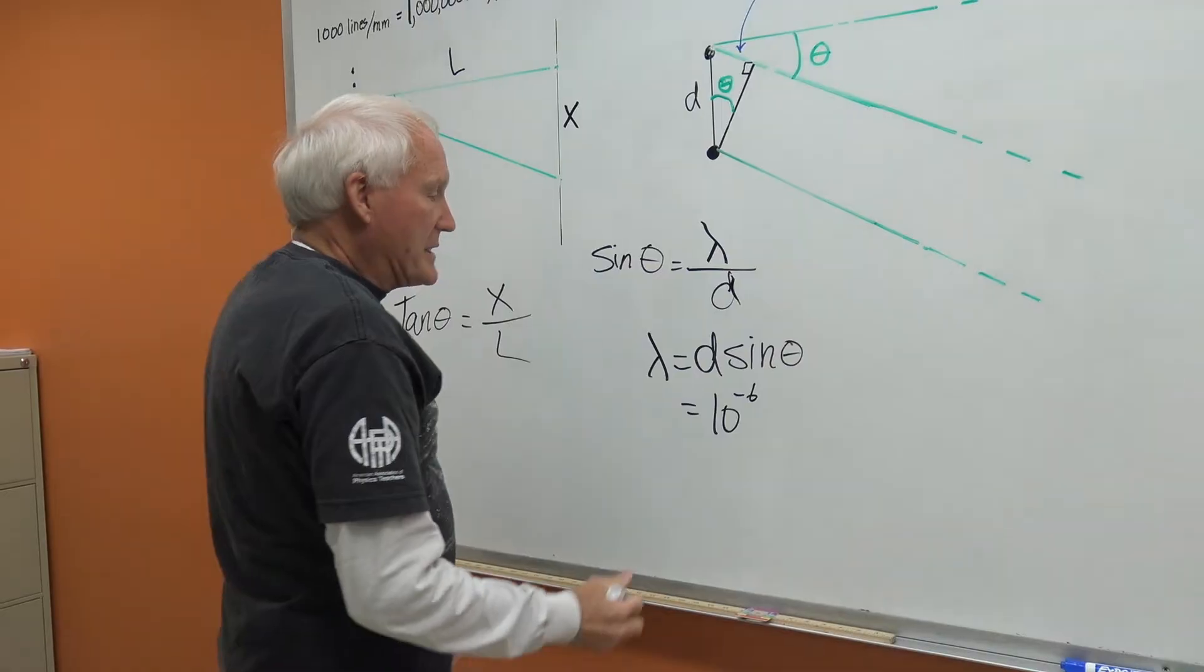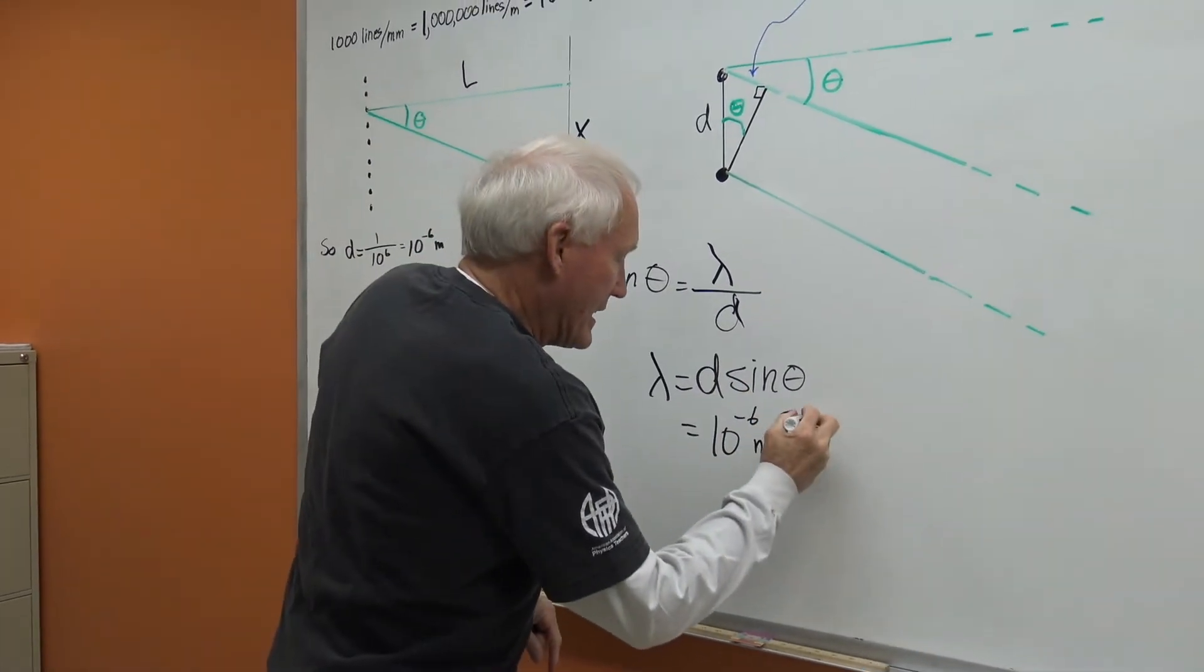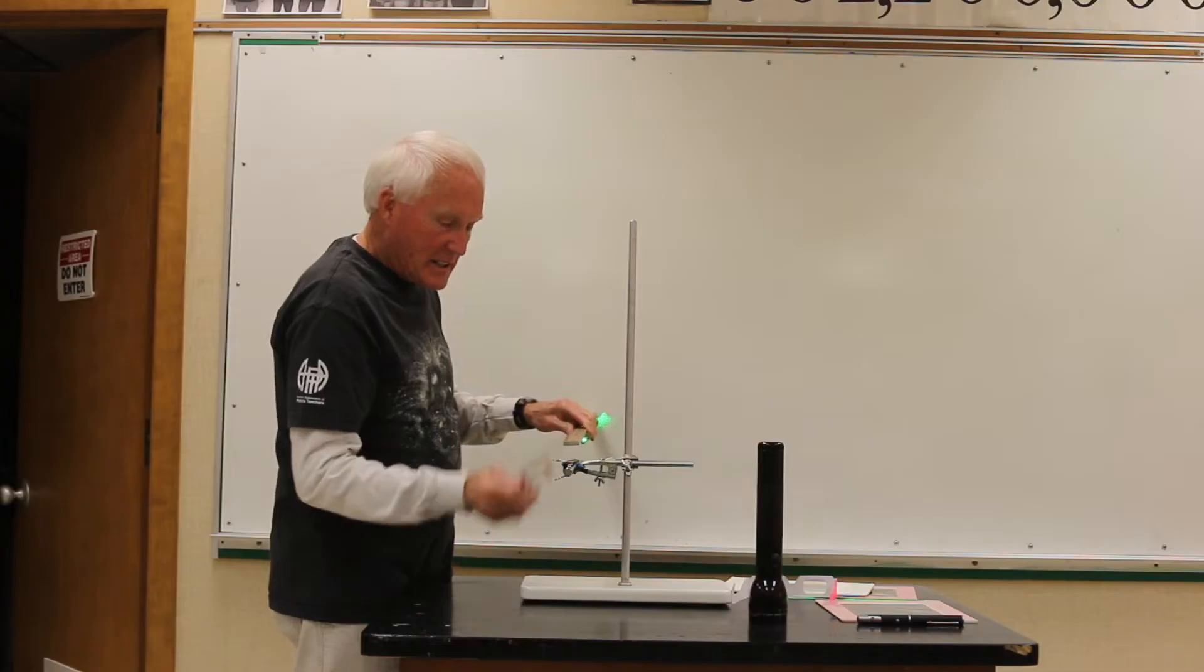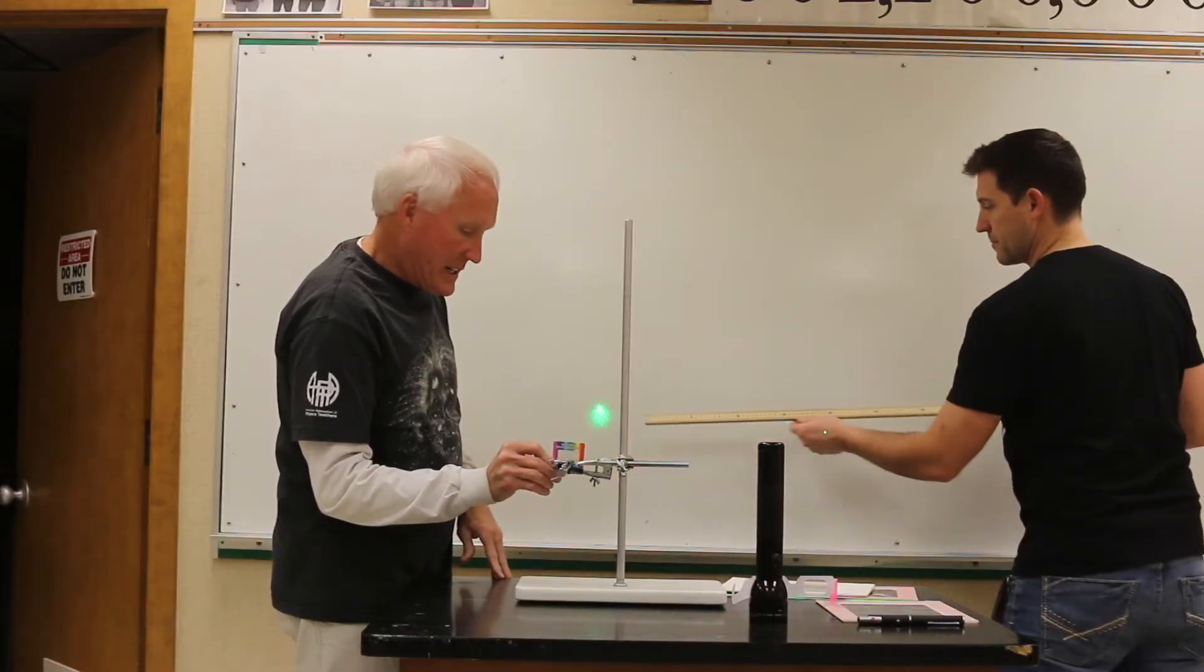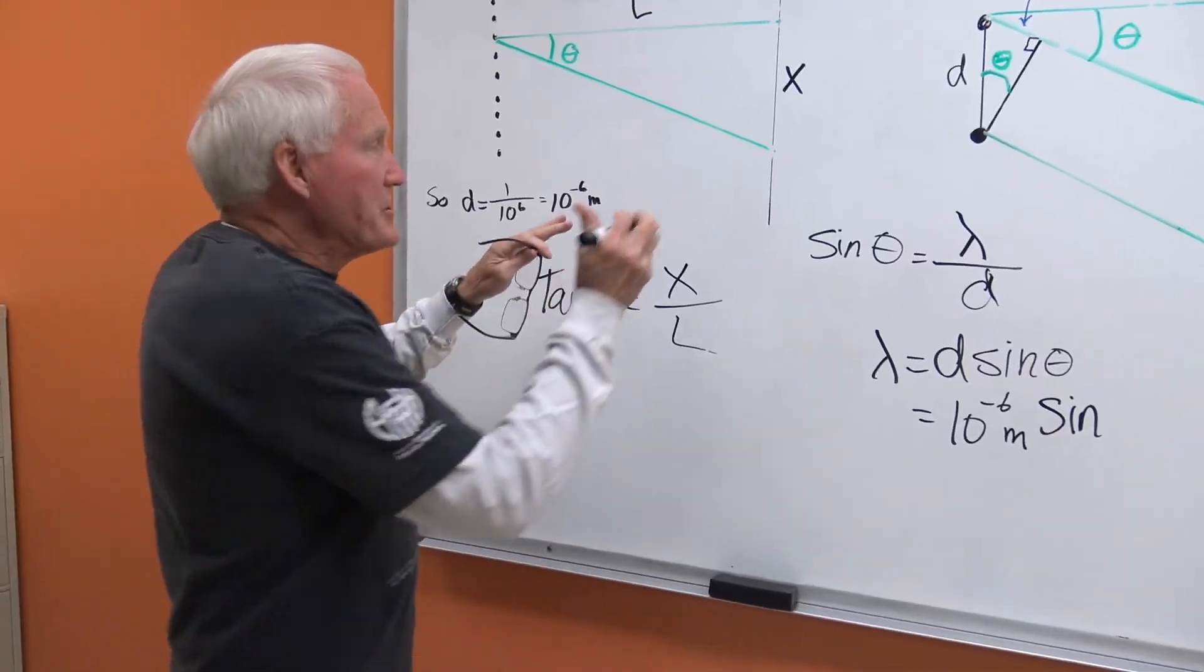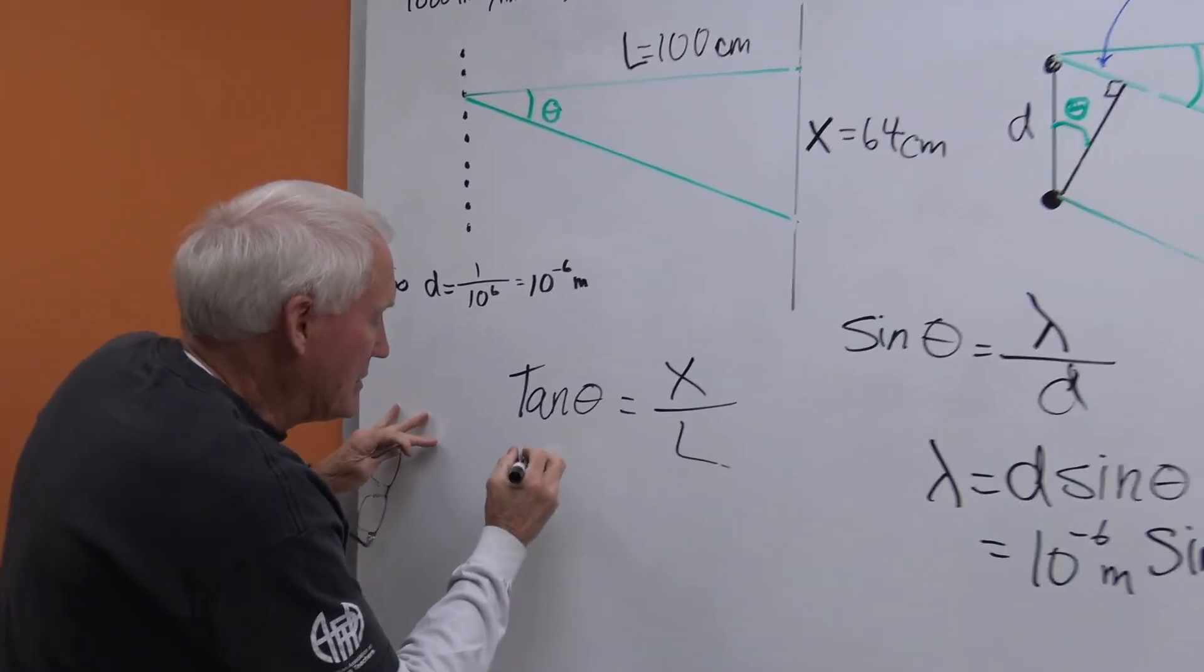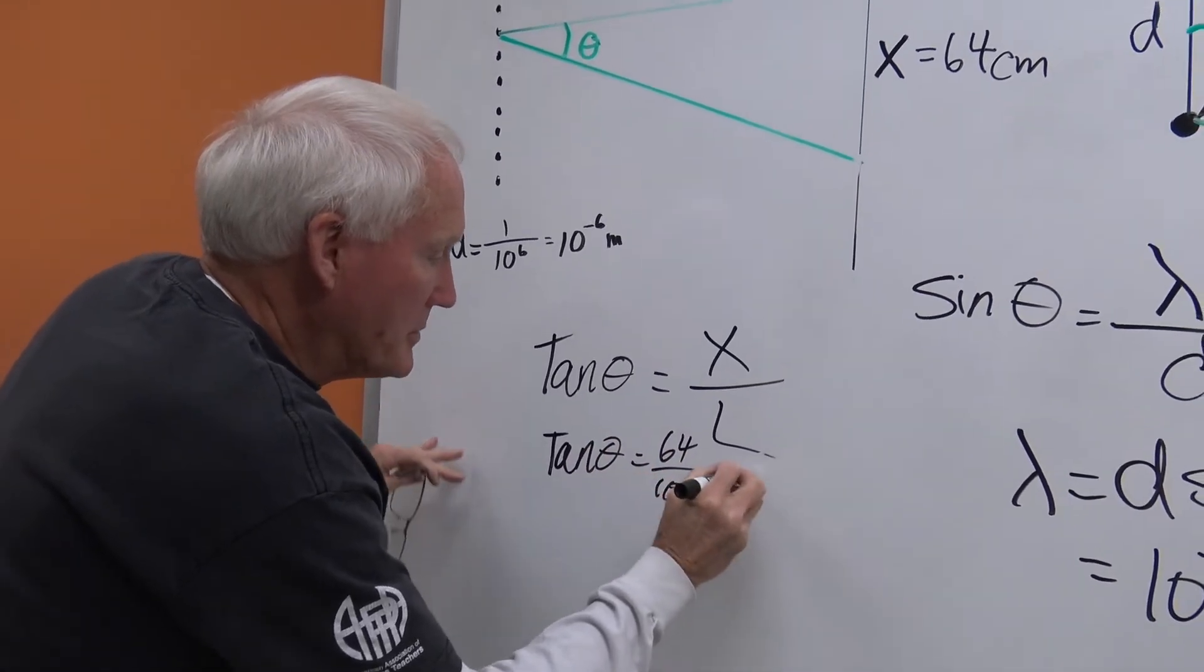And so all we have to do is measure these things to find the angle and take the sine of that angle. And we should get the wavelength, which makes this exciting because this is really fun. So right now I'm going to set it up so that my little grating is one meter from the board and measure out to that dot 64 centimeters. This is just by hand. This is really cool. And we measured that this distance x was 64 centimeters. And this distance l we chose very nicely to be 100 centimeters. So the tangent of the angle we're looking for is equal to 64 over 100, which equals .64.